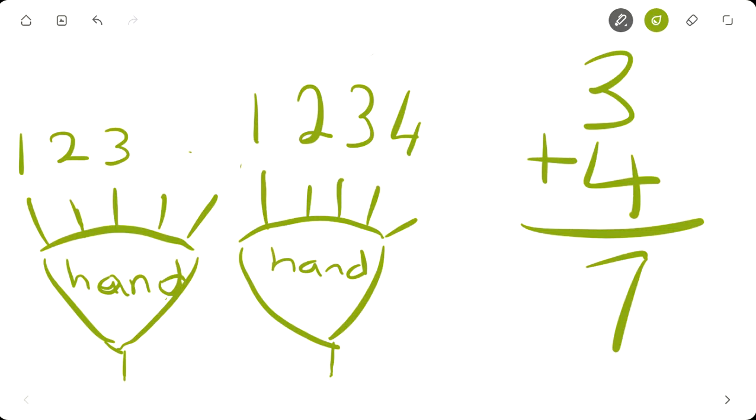Now count all the fingers you are holding up together: 1, 2, 3, 4, 5, 6, 7. Then you realize that when you count all the fingers that you have holding up together is 7. And 4 plus 3 equals 7. Let me give you another addition to solve.